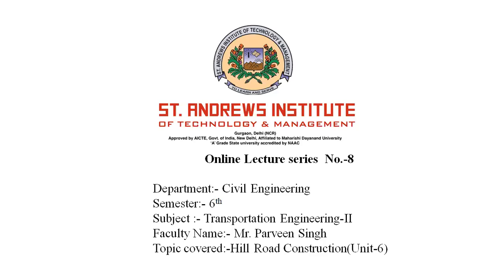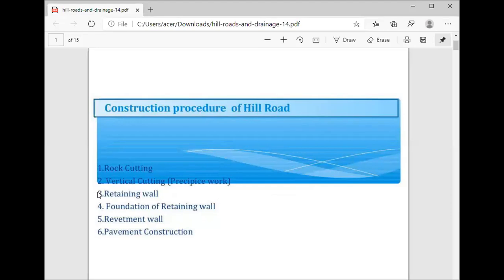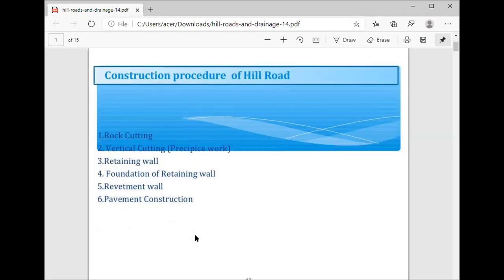Now we start with the construction procedure of hill road. Here we take six steps for construction. First is slope cutting, second is vertical cutting — that is a brief piece of work where you have a steep hill or overhanging cliff or mountain that we cut first. Next is retaining wall, foundation of retaining wall, revetment wall in terms of stone — you can also say sandbags or rubble wall. Next is pavement construction, after which we complete a section of the pavement.